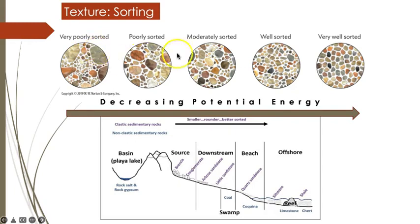Sorting is a measure of how uniform the grain size is within a body of sediment, and reflects the energy of the erosional agent, or mechanism, that transported the sediment. For example, glaciers, while slow-moving, are made of ice and have tremendous potential energy, and can therefore transport sediment of all sizes. Consequently, grains deposited by glaciers are poorly sorted. In contrast, wind is only capable of transporting fine to medium-sized sediment, and therefore wind deposits will be well sorted.